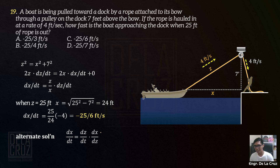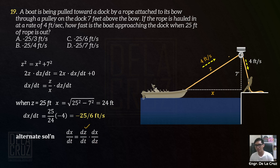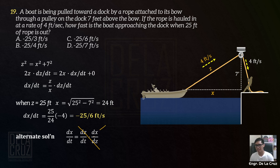I-analyze natin: pag-multiplayan ko yan ng dX over dZ, the dZ will cancel. What will remain is dX over dT. So equal na siya dito. Most of the students malilito dito, pero kailangan mong i-analyze. Given yung dZ over dT, ano yung needed mong i-multiply para maging dX over dT? I just need to multiply that one by dX over dZ to cancel dZ. So dX over dT yung matitira.